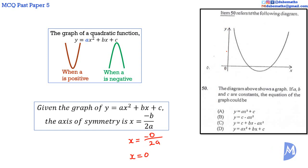If the axis of symmetry is the Y axis, then the graph would be symmetric about the Y axis. This graph isn't symmetric about the Y axis, so the answer is not A. The answer must be D.